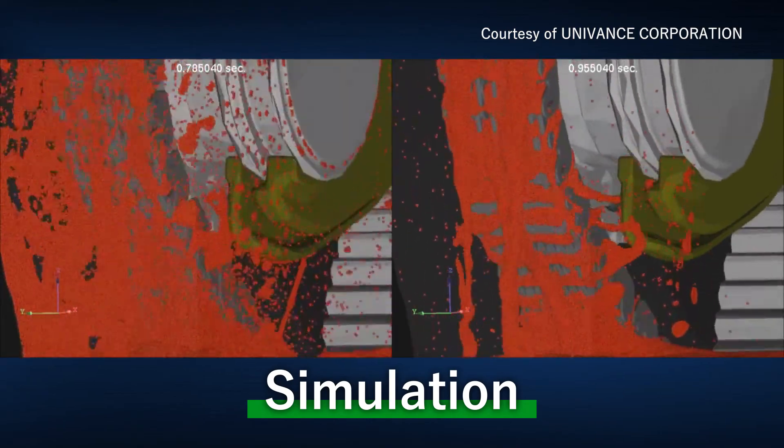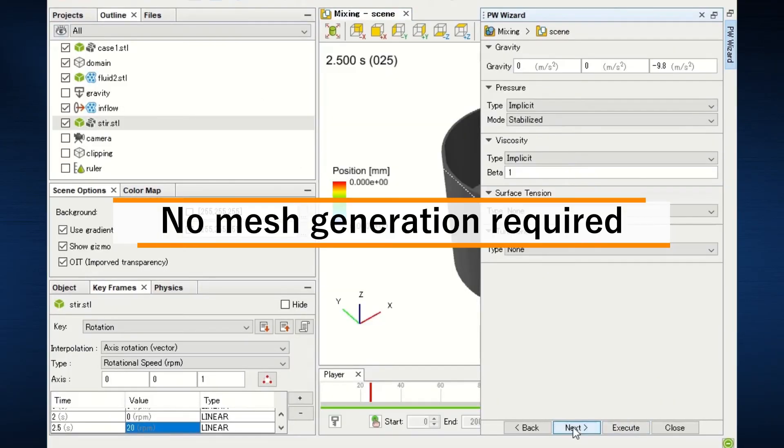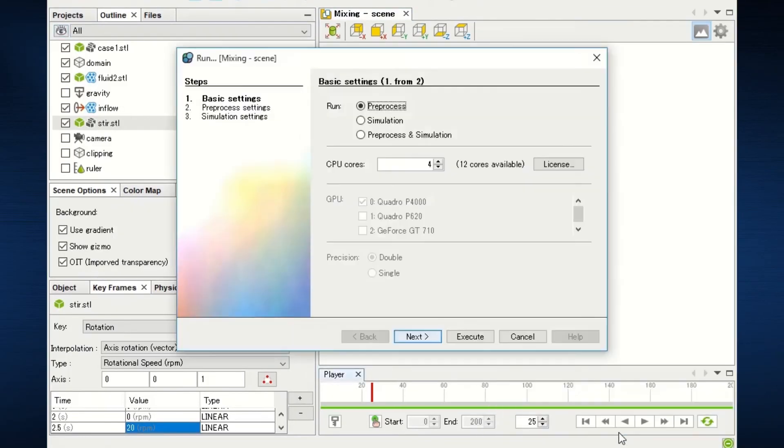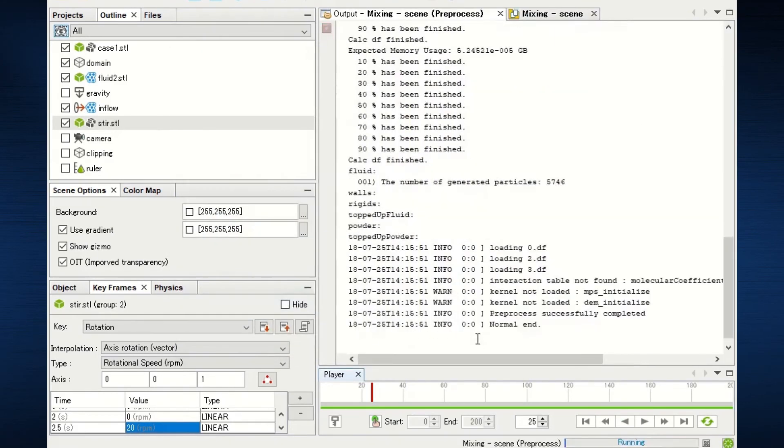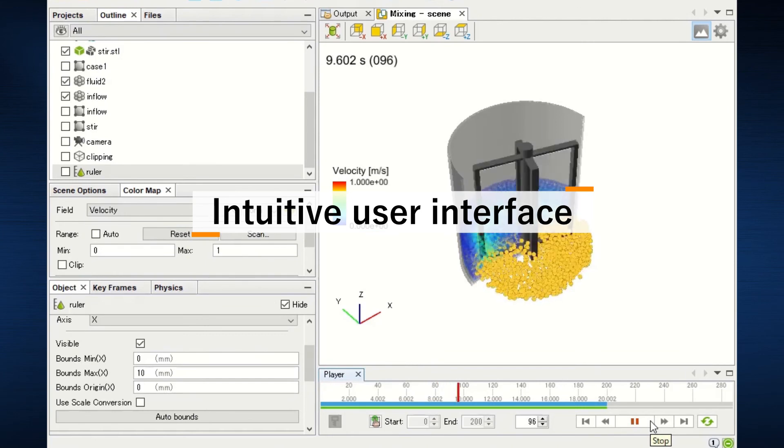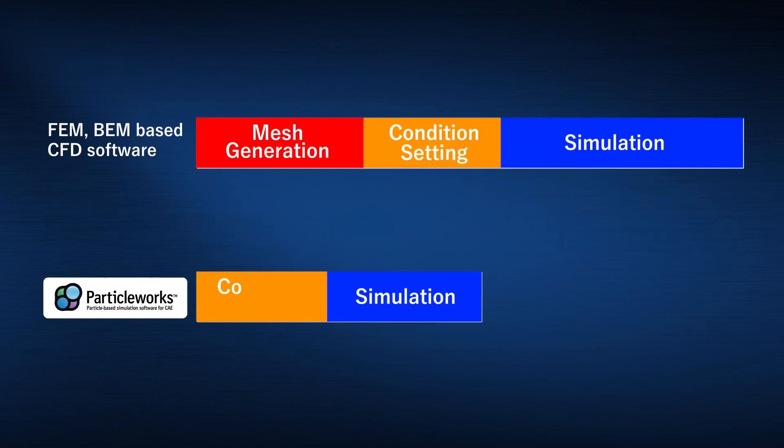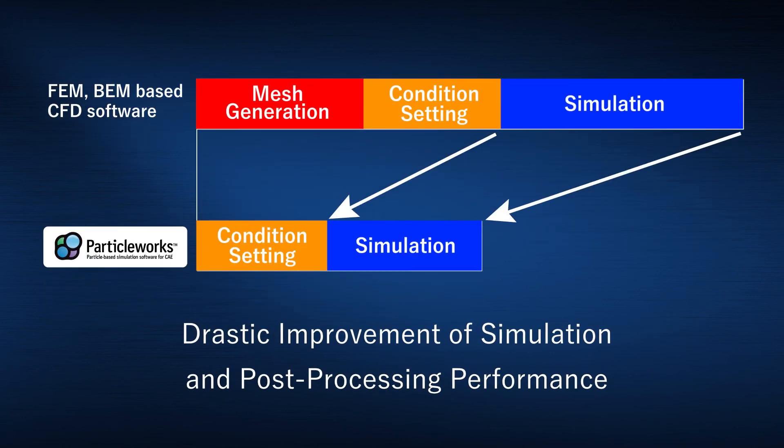The process of reviewing product design is greatly improved. Because ParticleWorks has an intuitive user interface and does not require mesh generation, users don't need to spend a significant amount of time creating simulation models. Supporting CPU multi-core and multi-GPU dramatically improves simulation and post-processing performance.